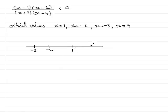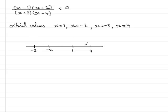We construct a number line and put on these critical values: minus 3, minus 2, 1, and 4. I don't need to place them to scale — I really just want to create separate regions. In this particular example, I've got five regions between the values.